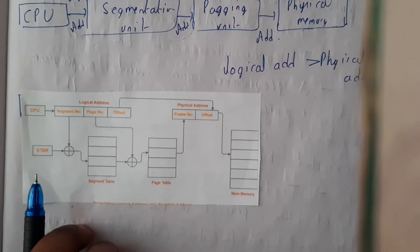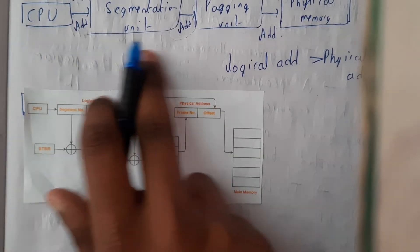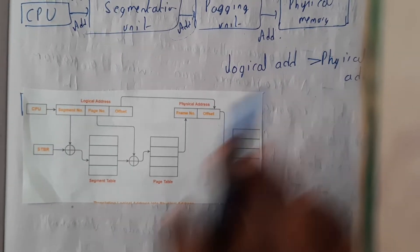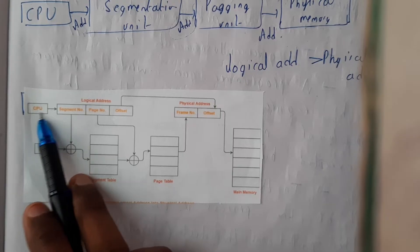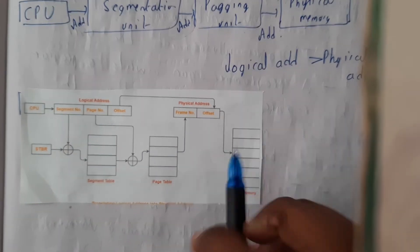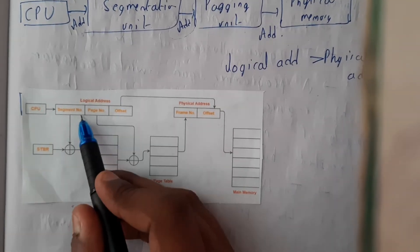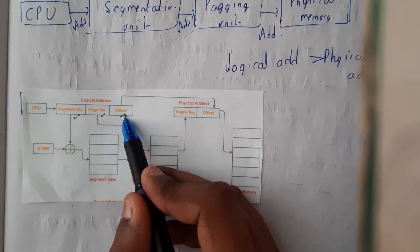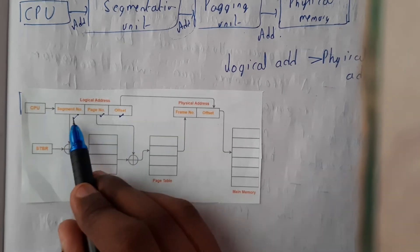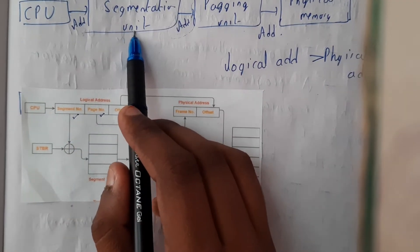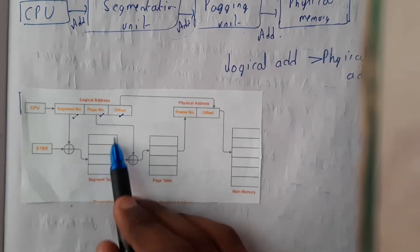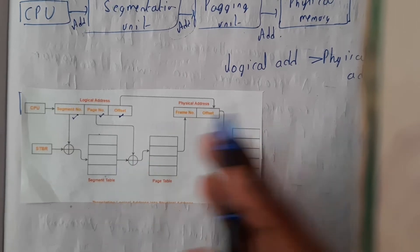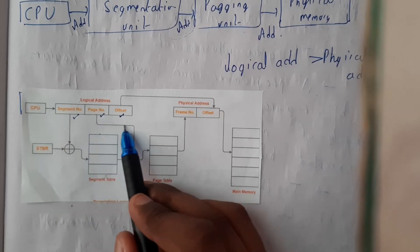If you want a small flow diagram of this in terms of hardware implementation — initially you have the CPU. The logical address will be divided into three parts: one is the segment number (in which segment it is), the page number (in which page it is), and the offset. So initially we do segmentation — the segment number is searched in the segment table and you take the resulting value.